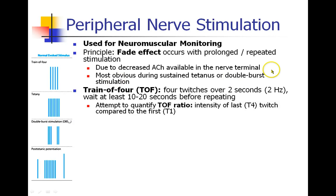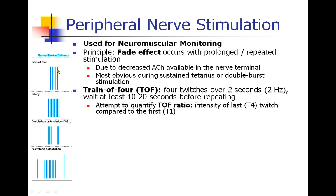What we're really trying to do is quantify the train of four ratio — the intensity of twitch number four compared to twitch number one. In a normal patient who hasn't received any neuromuscular blockade, all four twitches are the same intensity, so the train of four ratio is one.